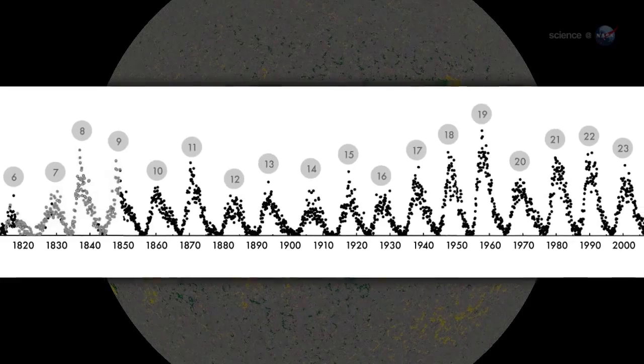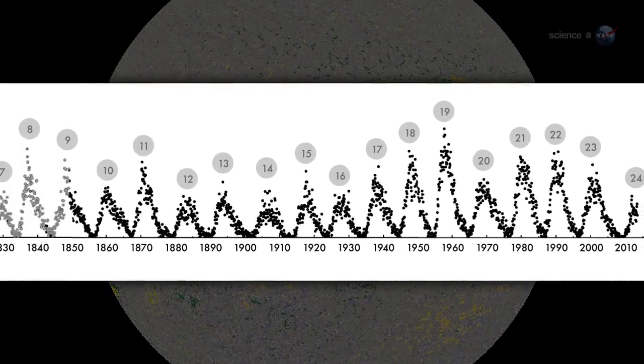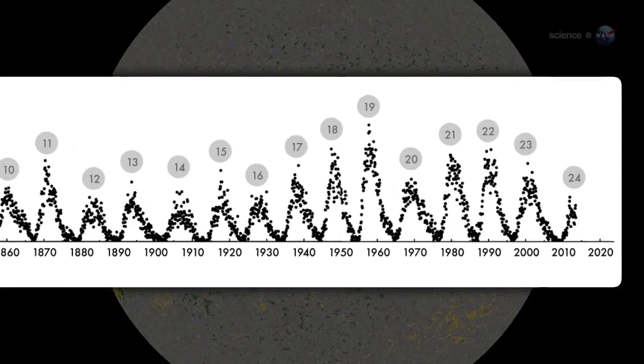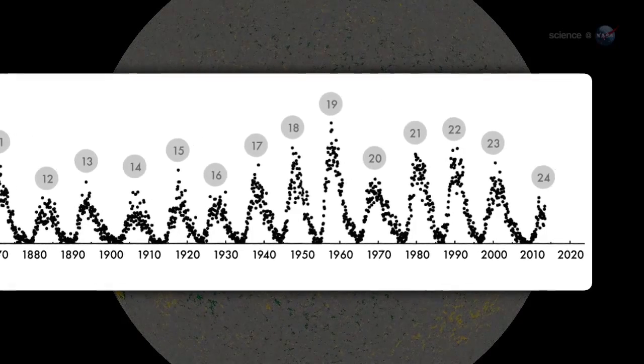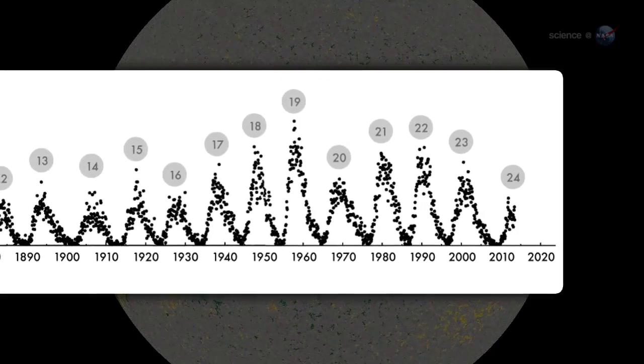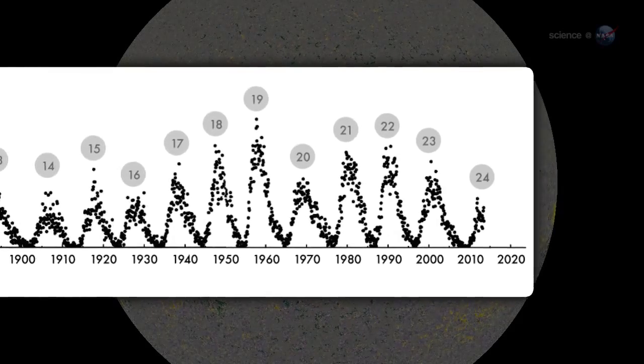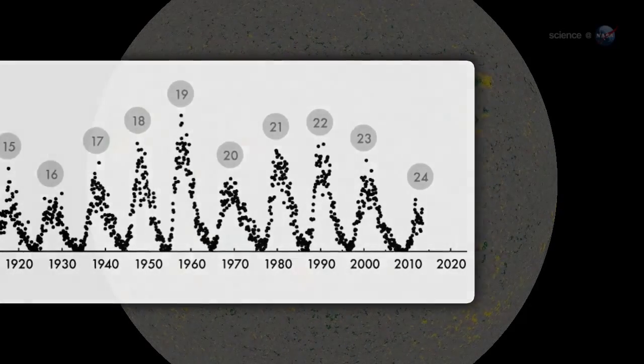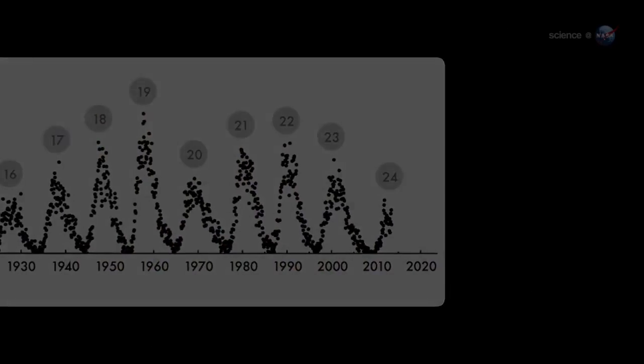The Sun's magnetic field changes polarity approximately every 11 years. It happens at the peak of each solar cycle, as the Sun's inner magnetic dynamo reorganizes itself. The coming reversal will mark the midpoint of solar cycle 24. Half of SolarMax will be behind us, with half yet to come.